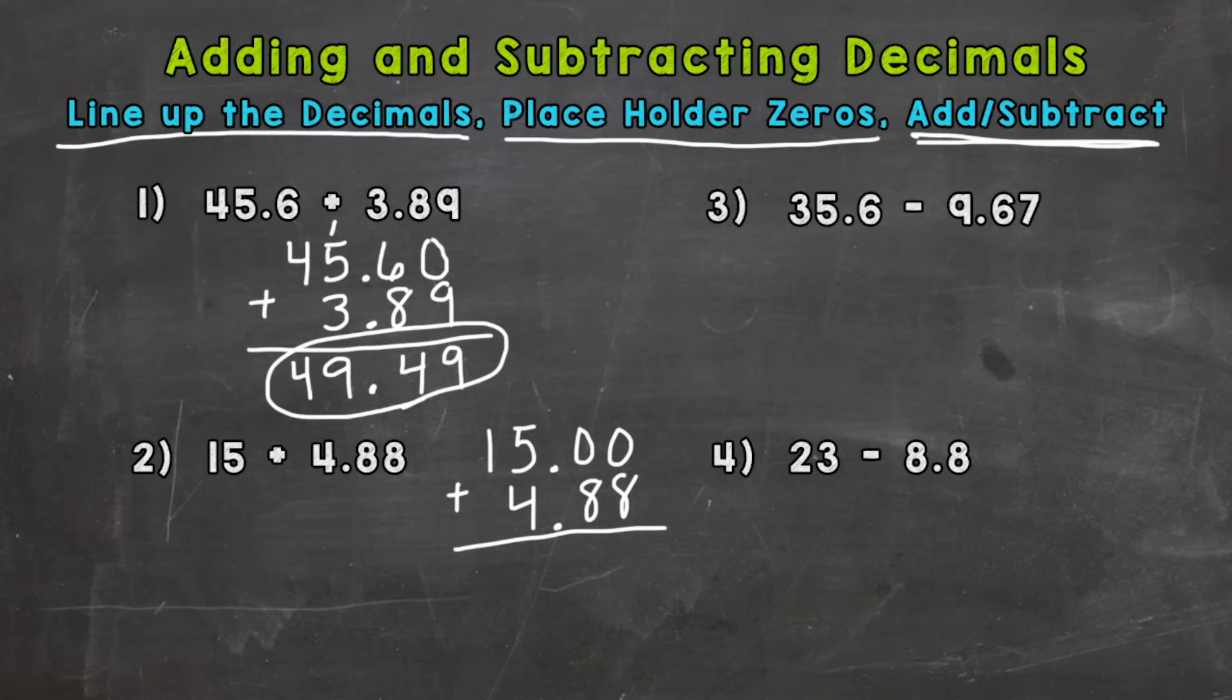0 plus 8 is 8, 0 plus 8 is 8, bring the decimal straight down, 5 plus 4 is 9. 1 plus 0, you have the 1 there which gives us 19. So 19 and 88 hundredths.